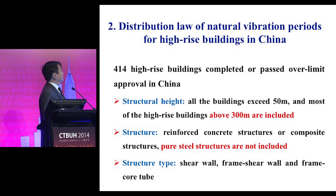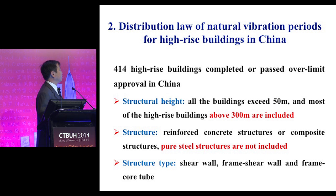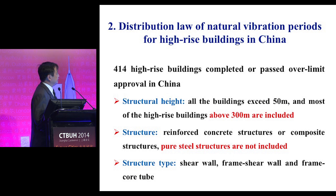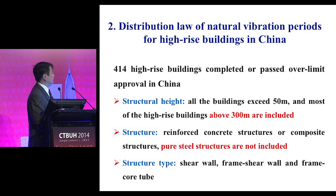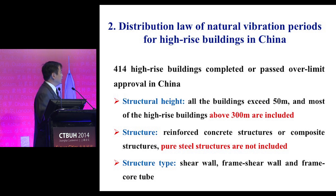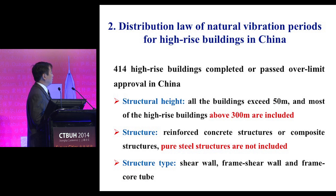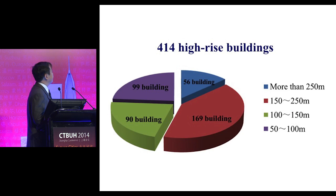So we collected 414 high-rise buildings completed or that passed over-limit approval in China. All structures are over 50 meters, and most high-rise buildings above 300 meters in China are included. The structures are reinforced concrete or composite structures; no pure steel structures are included as we have very few of those.